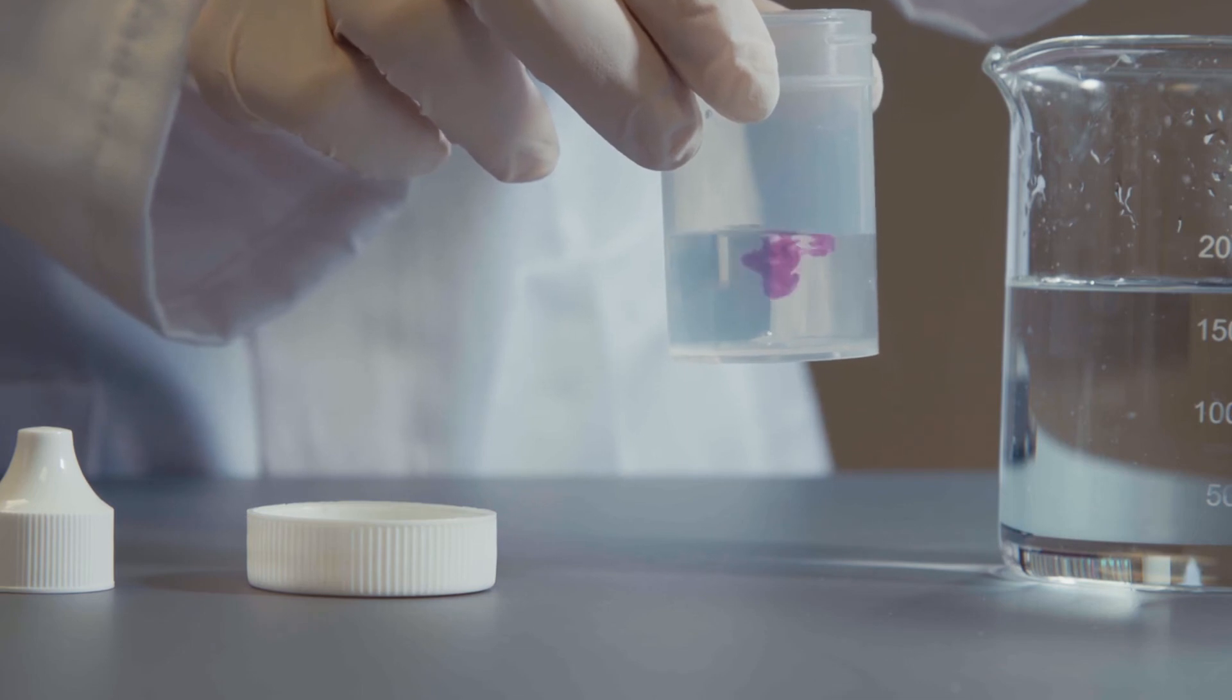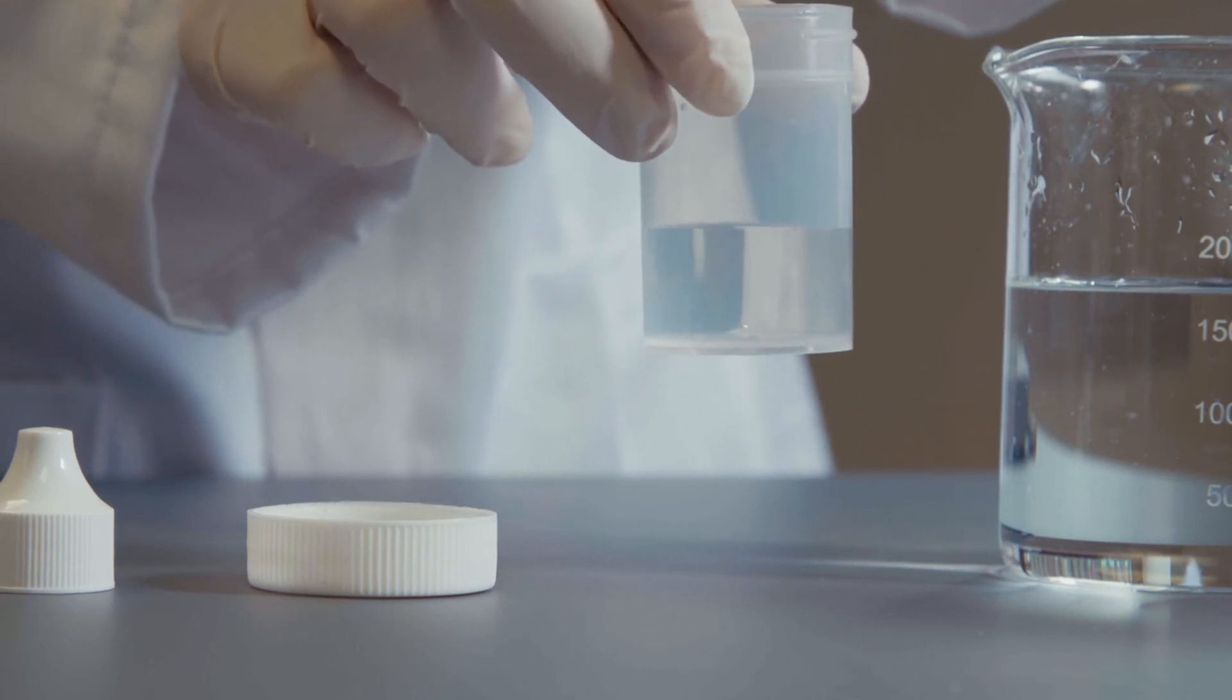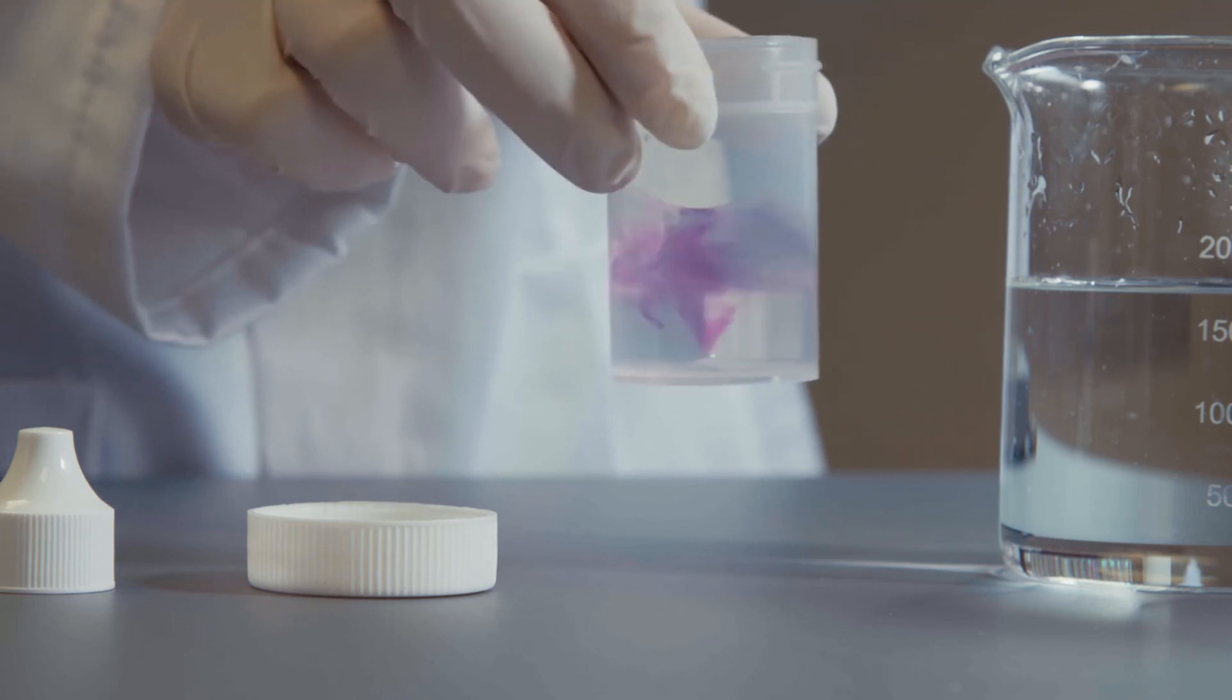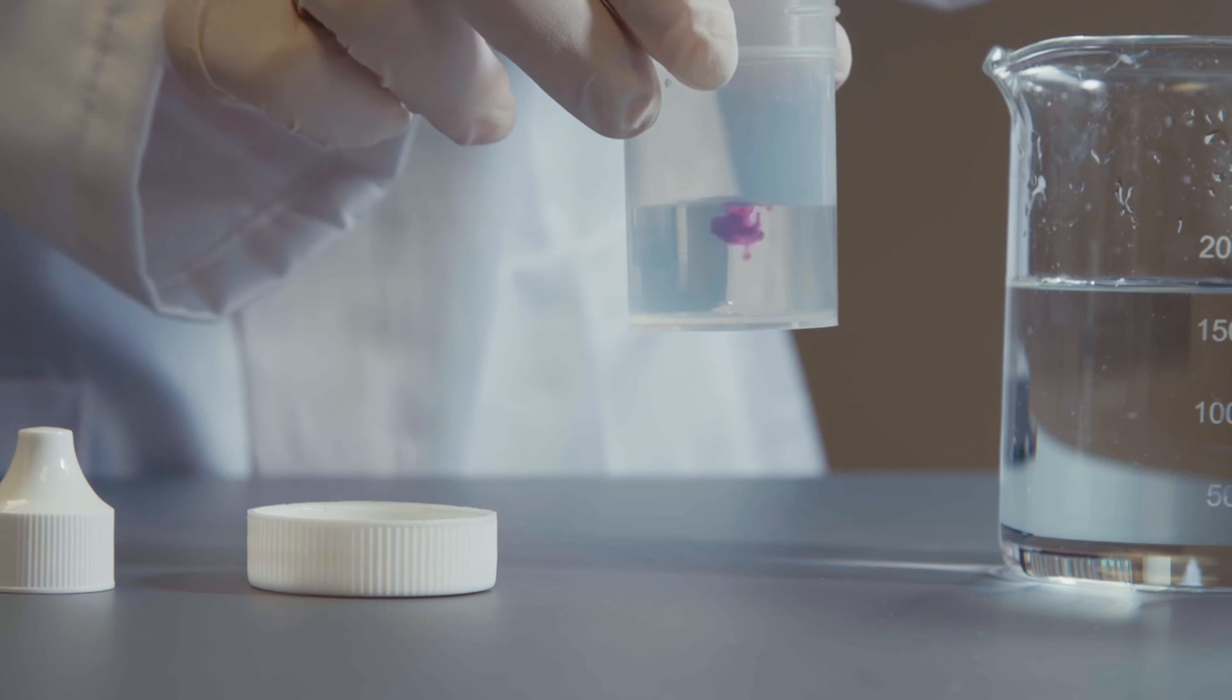The number of drops counted for the sample to turn purple can be inserted into the equation found in the instructions. The answer will be the concentration of Sanosil Super 25 in ppm.